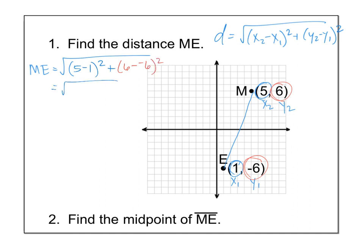Keep simplifying. 5 minus 1 is 4. The minus and minus on the 6, or the minus and negative, changes to a plus. And so that ends up being 12. 4 squared is 16. 12 squared is 144.